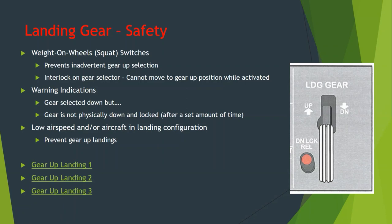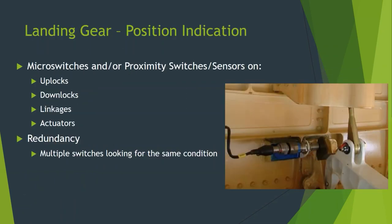There are a few videos here of different gear-up landings. Most were intentional gear-up landings due to a malfunction rather than accidental. The result is the same — for maintenance, it's going to require some repairs. The gear position indication system includes micro switches, proximity switches, or sensors that can be in many different locations on the gear to give status indication.